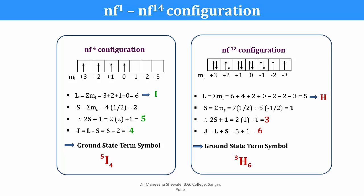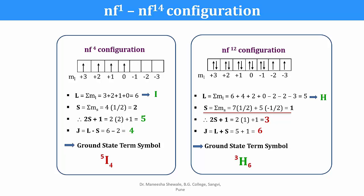For the NF12 configuration, where the subshell is more than half filled: summing the ML values for the 12 electrons gives L=5, represented by H. Seven electrons have spin +½ and 5 have spin −½, so summation of MS = 1 and spin multiplicity 2S+1 = 3. The subshell is more than half filled so J = L+S = 5+1 = 6. The ground state term symbol is 3H6.